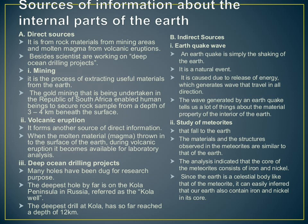Since there is a celestial body like that of the meteorite, we can easily infer that our Earth also contains iron and nickel. As I told you earlier, the core of the meteorites consists of nickel and iron. Like that, the core of the Earth also consists of nickel and iron.